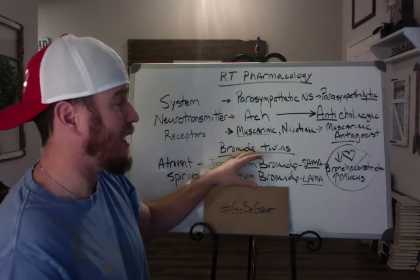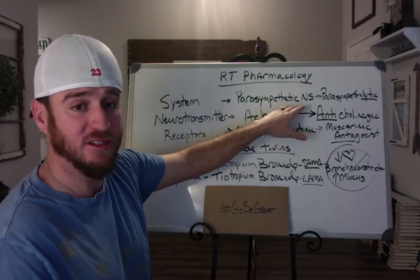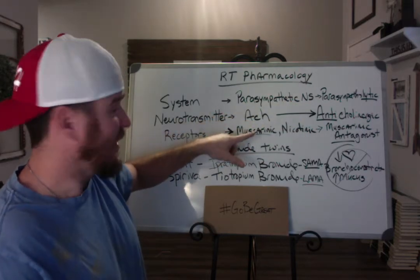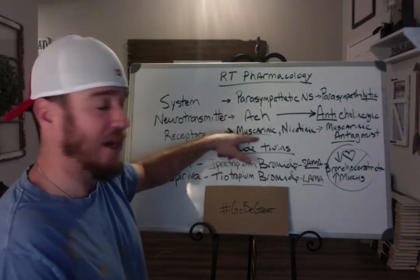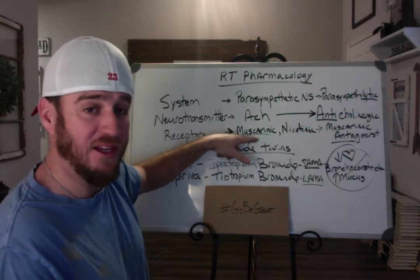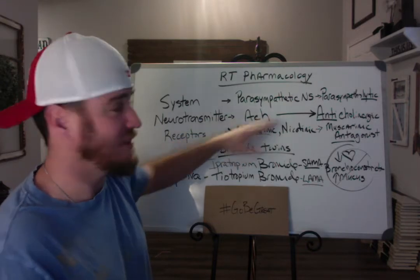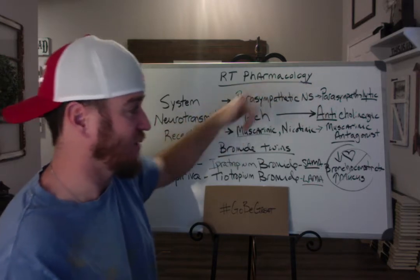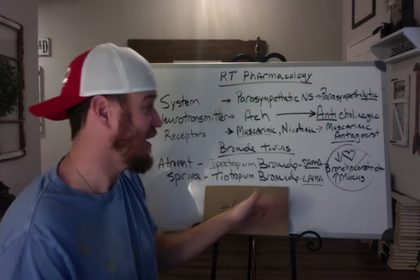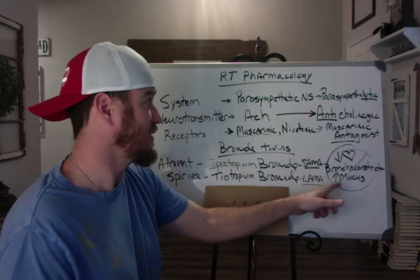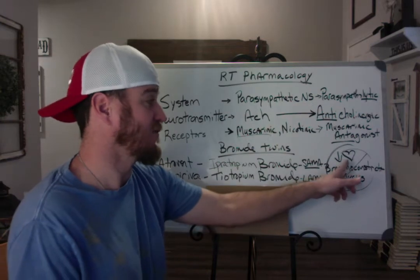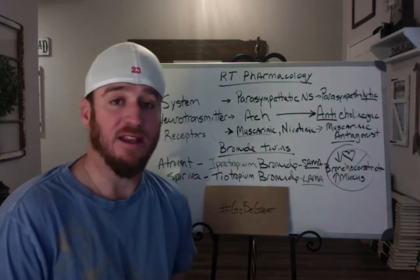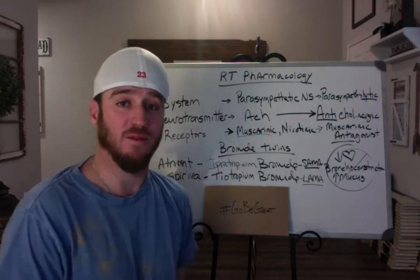These drugs block the parasympathetic nervous system. They block acetylcholine by binding to the muscarinic receptors and blocking their availability to acetylcholine. This is what makes them parasympatholytics, anticholinergics, and muscarinic antagonists — ultimately blocking the parasympathetic nervous system from causing bronchoconstriction and an increase in mucus production.